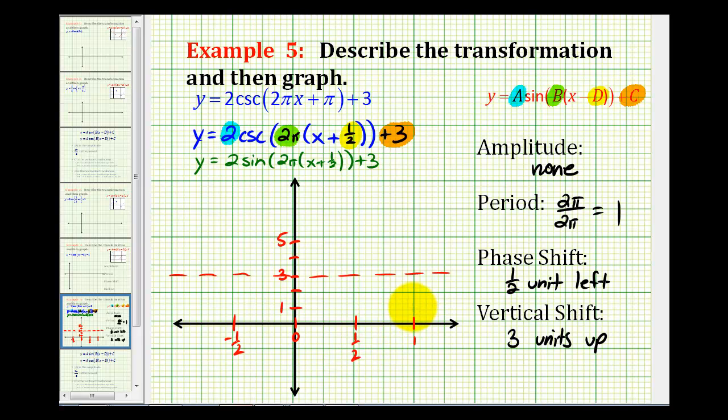So let's go ahead and clear this off to avoid any confusion. And then from here, we'll go ahead and graph our sine function with all these transformations, and that's going to help us graph the given cosecant function. But before we graph this sine function on this interval that will be one complete period, let's go ahead and divide it into fourths. So this would be negative one fourth, and this would be positive one fourth.